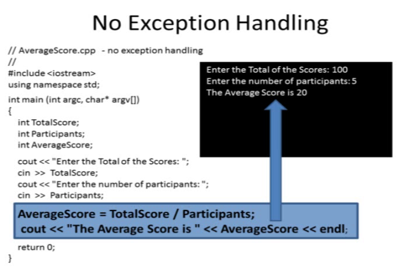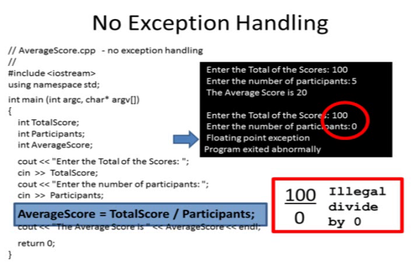This program works fine as long as there is a number placed into participants that is non-zero. For example, if I have a total score of 105 participants, then the average score is 20. What happens if the total score is 100 and the number of participants is entered as zero?